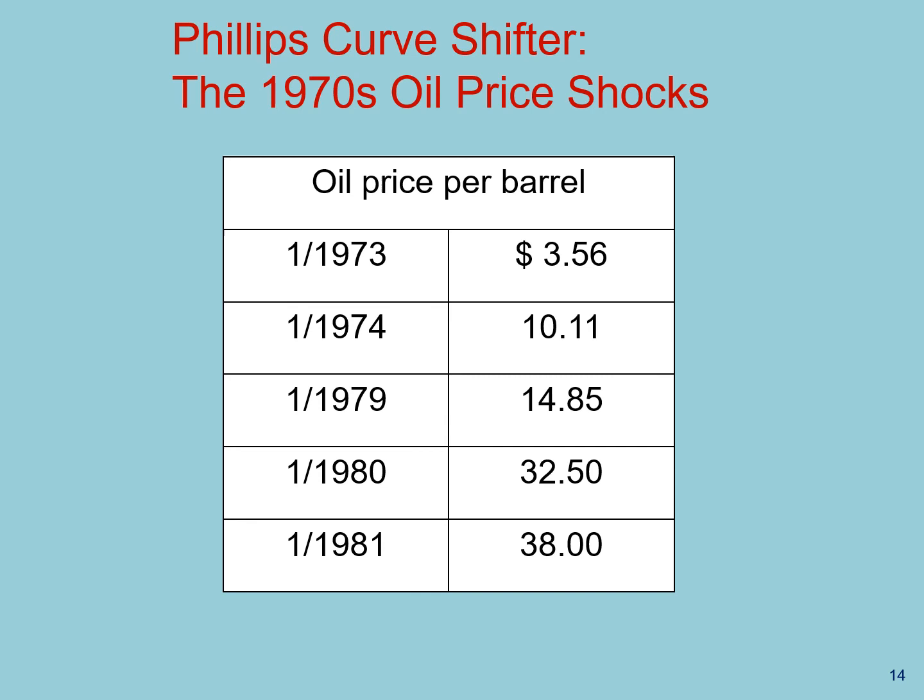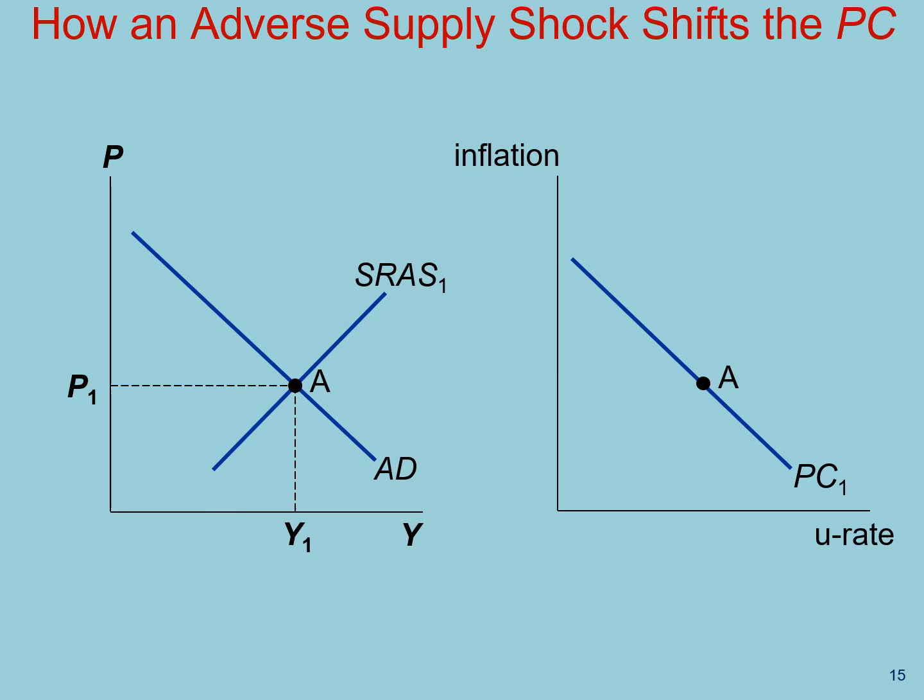Now let's talk about one last shifter of the Phillips curve. Because the Phillips curve is just the short-run aggregate supply in different clothes, supply shocks that shift the short-run aggregate supply curve will also shift the Phillips curve. Let's go back to the 1970s and early 1980s to examine the oil price shocks in the context of the Phillips curve. In 1973, OPEC colluded to raise the price of oil to historic heights. The Fed chose to accommodate the first shock in 1973 with faster money growth, resulting in higher than expected inflation. In 1979, oil prices surged again, shifting the Phillips curve further to the right.